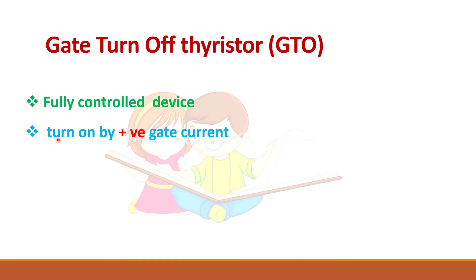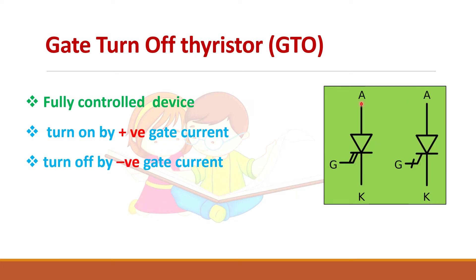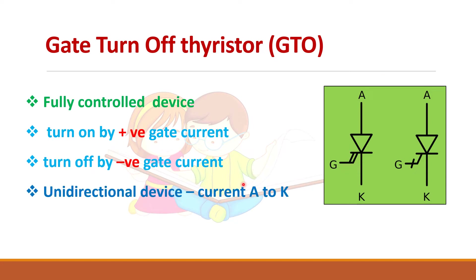The GTO is a fully controlled device: turned on by positive gate current and turned off by negative gate current. The symbol of GTO is similar to that of an SCR, with three terminals — anode, cathode, and gate. One difference is that the gate has two lines to indicate it accepts both positive and negative current. The GTO is a unidirectional device like an SCR, carrying current from anode to cathode, and it is also a bipolar device.